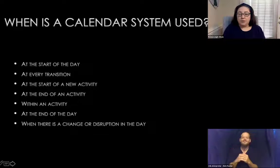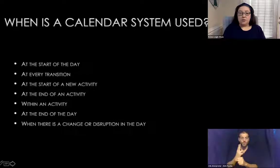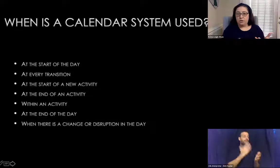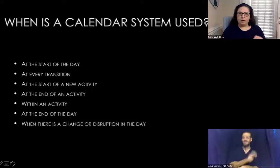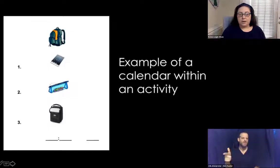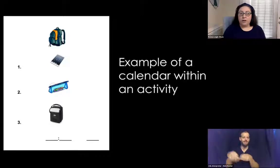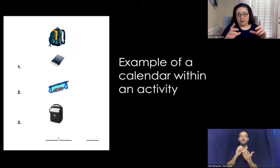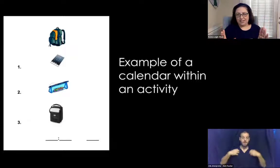We can also use calendar systems when there's a change or disruption in the day. If a field trip is canceled due to weather, we can use our calendar system to show the child in a very concrete way that we're not going to be doing what was originally scheduled. This is an example of a calendar within an activity — a step-by-step for a child using visual communication picture symbols of how to pack his backpack when his calendar says it's time.